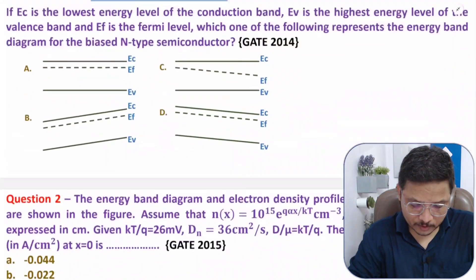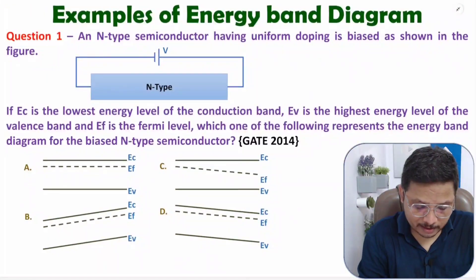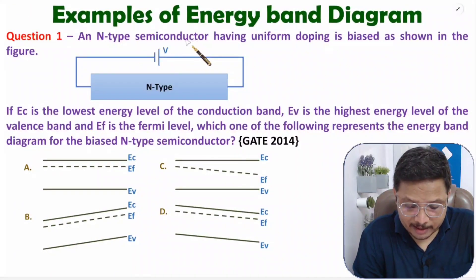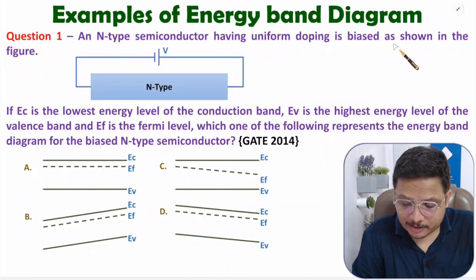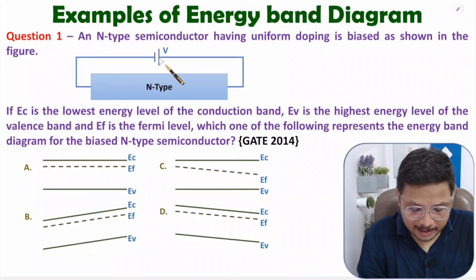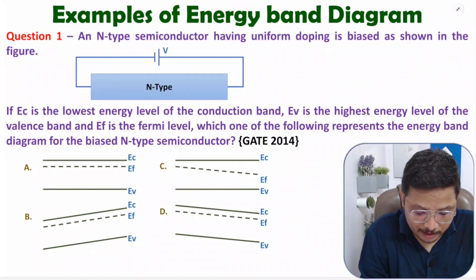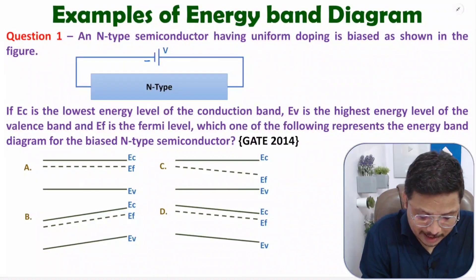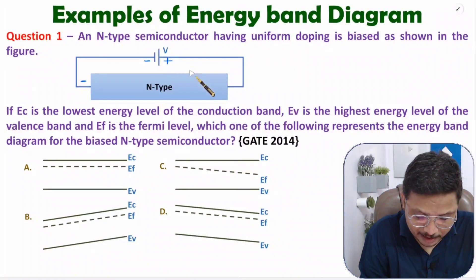In the first question, an n-type semiconductor having uniform doping is biased as shown in the figure. We have an n-type material and we are applying a battery to bias it. The negative terminal is connected on one side and the positive terminal is connected on the other side.